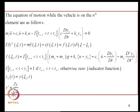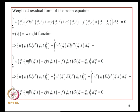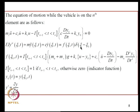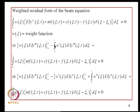The equation of motion while the vehicle is on the nth element is rewritten in terms of XI, where the prime now denotes differentiation with respect to XI — the only difference being the introduction of this local coordinate system. We then write the weighted residual form of the beam equation: we take all forcing functions to the left side, multiply by a weight function W, and integrate over 0 to L_N, set equal to 0.